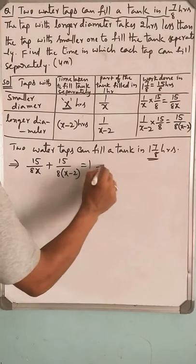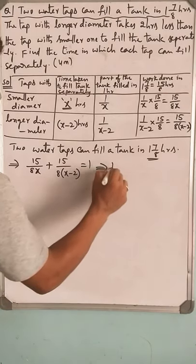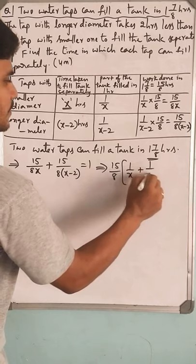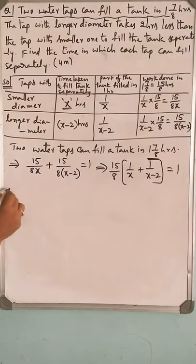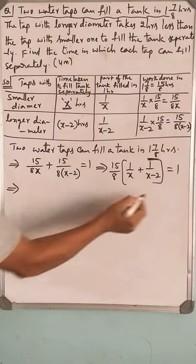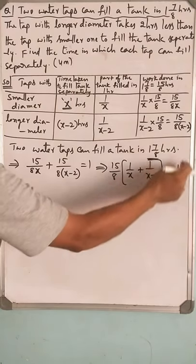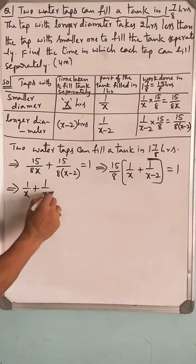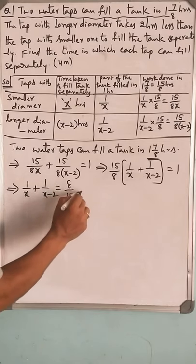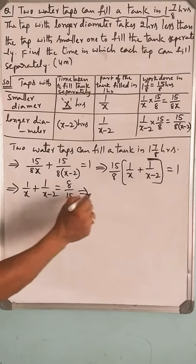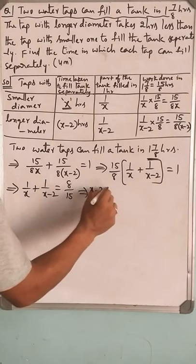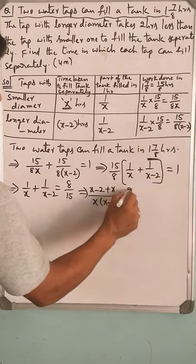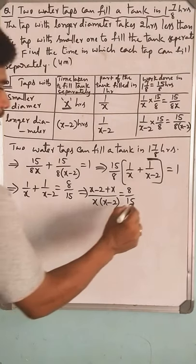Take 15/8 common: 15/8 times (1/x + 1/(x-2)) equals 1. Bring 15/8 to RHS and it becomes reciprocal 8/15. Now 1/x + 1/(x-2) equals 8/15. Do cross multiplication: (x-2 + x)/(x(x-2)) equals 8/15.